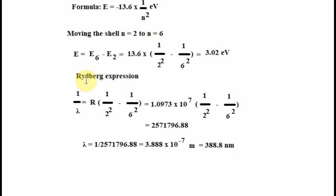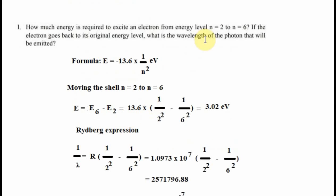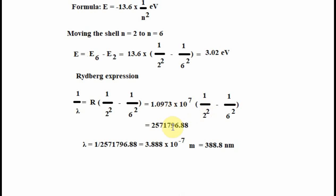So we apply the Rydberg expression to find the wavelength. We have R is about 1.0973 multiplied by 10 to the power 7. And n equals 2 and n equals 6. So we calculate the number.